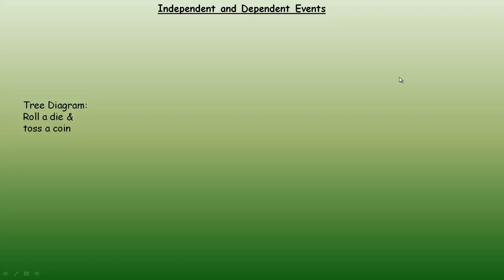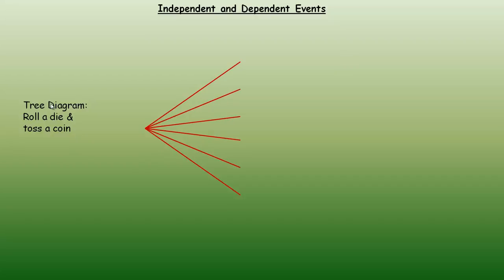In this tutorial we'll take a look at independent and dependent events, and we're going to start with what's called a tree diagram. This tree diagram is a way to graphically represent something that is usually a compound event, not a single event. We're going to simulate rolling a normal six-sided die and then tossing a coin. Since there are six possible outcomes when you roll the die, there are six branches.